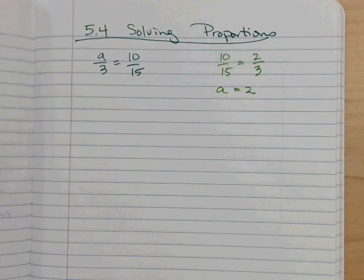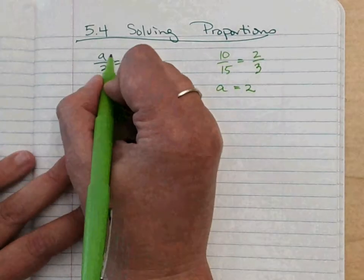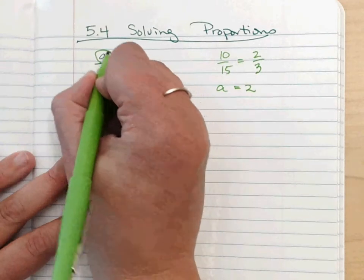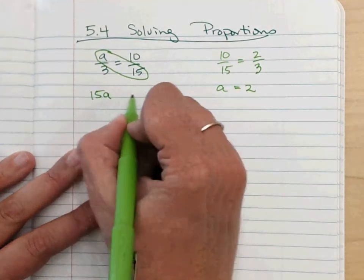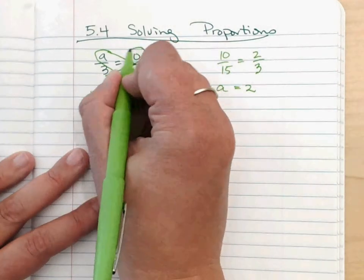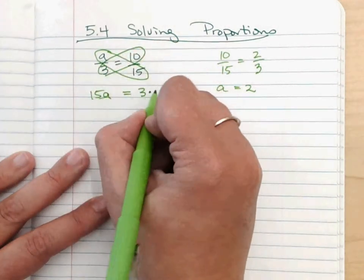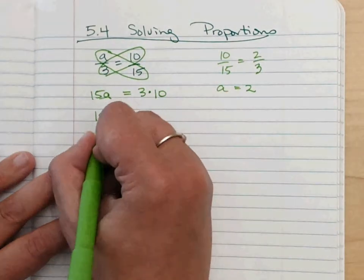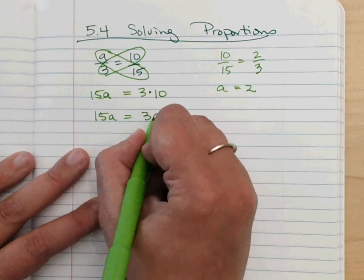But if I didn't notice that right away, I could use the idea of the cross products principle. So the cross products would be 15 times A, which I don't know what that is, is equal to 3 times 10. So I get 15A equals 30.